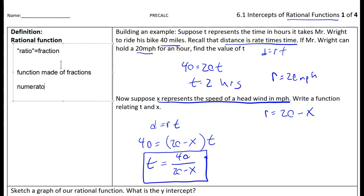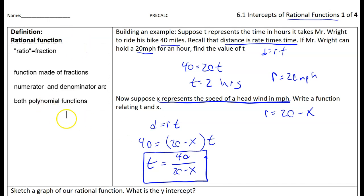In this case, our numerator and denominator are both polynomial functions. 40 and 20 minus x are both polynomials. They're very easy polynomials without any x squareds or higher powers, but they're polynomials nonetheless. There's a reason we're studying these after polynomial functions because they're built of polynomials.